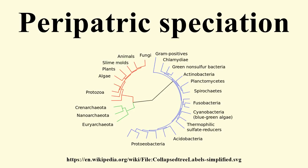Peripatric speciation was originally proposed by Ernst Mayr and is related to the founder effect. Because small isolated populations may undergo selection bottlenecks, genetic drift is often proposed to play a significant role in peripatric speciation.